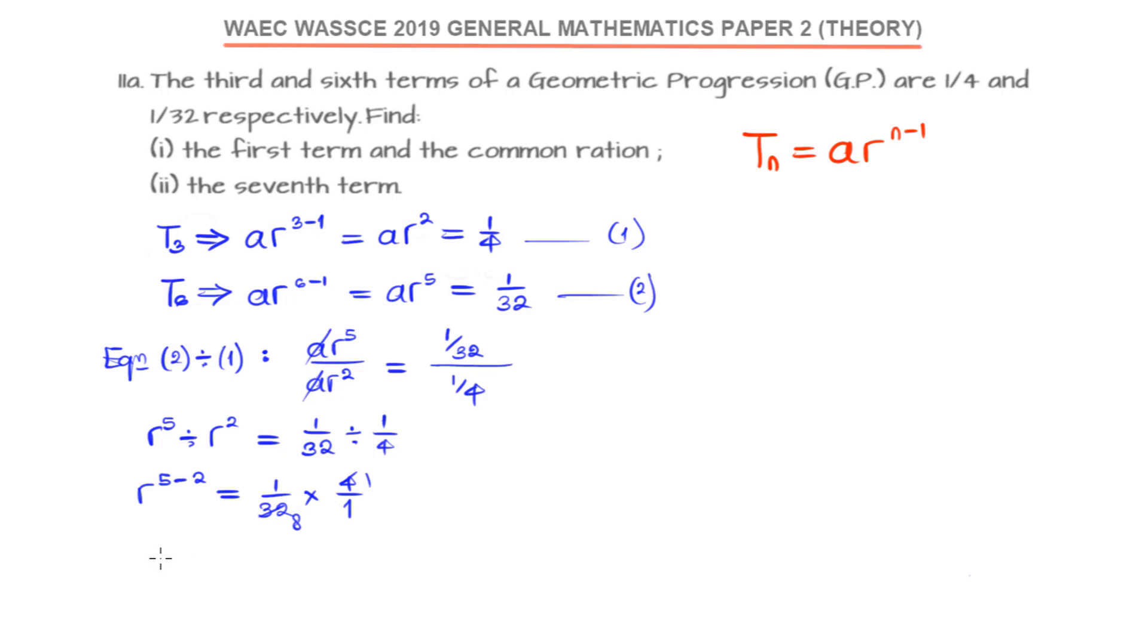Using the laws of indices, R^5 divided by R^2 can just take one of the R and subtract the powers. So we have R^3 equals 1/8. We can say R is the cube root of 1/8. Or instead of saying 1/8, we know 1/8 is 2^(-3), so we can say R is the cube root of 1/2^3.